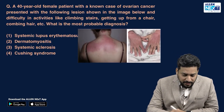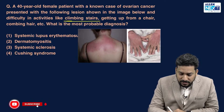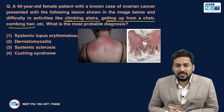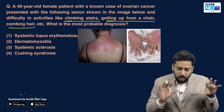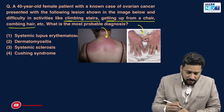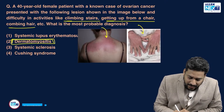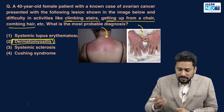A 40-year-old female patient, known case of ovarian cancer, presented with the following lesion shown in the image. She has difficulty in activities like climbing stairs, getting up from a chair, and combing hair — all suggestive of muscle weakness. Muscle weakness along with the skin lesions as shown is suggestive of dermatomyositis. The skin lesions are sometimes very important, like Gottron's papules.